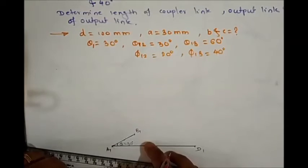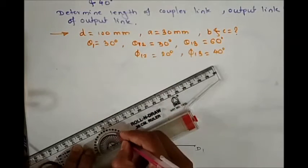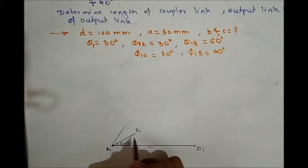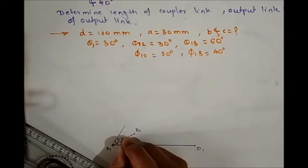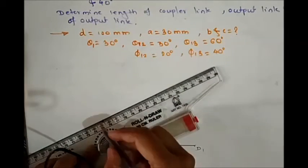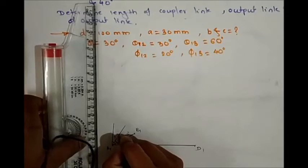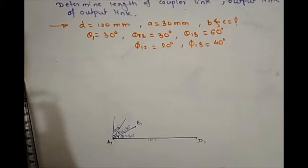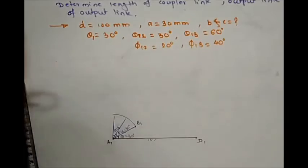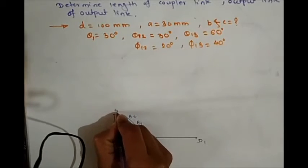The second position of the input link is from the initial position, so the angle theta 1-2 is 30 degrees. Mark that 30 degree angle and draw a line with magnitude equal to A1 B1. Similarly, from the initial position, the third position has an angle theta 1-3 equal to 60 degrees. Draw an arc to get the same magnitude, and extending these lines gives us points B2 and B3.